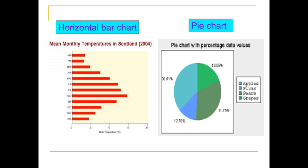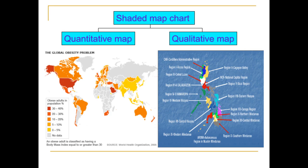A pie chart is a circular statistical graph which is divided into slices to illustrate numerical proportion. In a pie chart, the arc length of each slice is proportional to the quantity it represents, and the sum of its proportions is 100%.